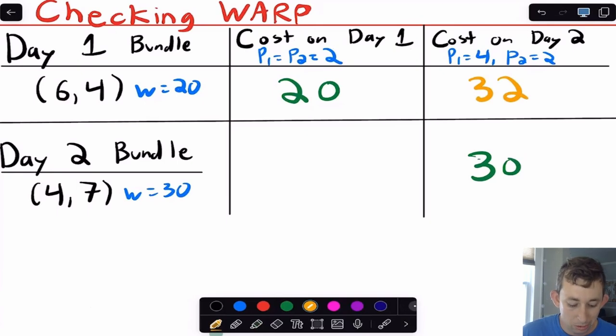if I look at my day two bundle, it cost me 30 bucks on day two, which is exactly how much money I had. And on day one, that would cost me exactly eight plus 14, and that's going to be 22 because my prices were going to be the same of $2 because I'm just calculating the cost of bundle two on day one. And we can see that would have not been affordable to me under day one because I only walked in with 20 bucks. So this is not a WARP violation because the bundle I picked on day two was not available, was not affordable to me on day two. And similarly, the bundle that I got on day one was not affordable to me on day two because of the price change. So this is totally fine. This is not a WARP violation.